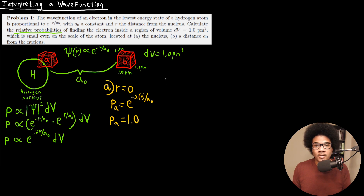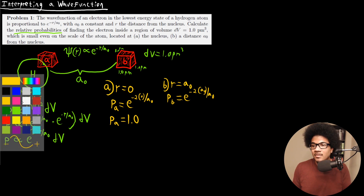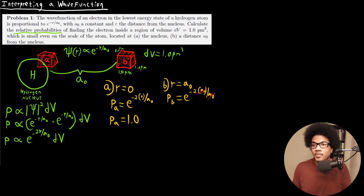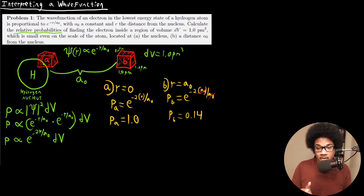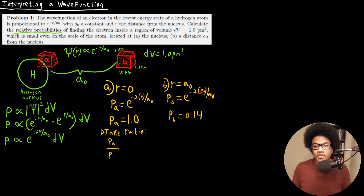Now for part B, at some distance a-naught, r equals a-naught. The probability for B is e to the negative 2 times a-naught over a-naught. The a-naught cancels with a-naught, so we're left with e to the negative 2, which gives us 0.14. Taking the ratio to get the relative probability, P-A over P-B equals 1 over 0.14, which equals 7.1.